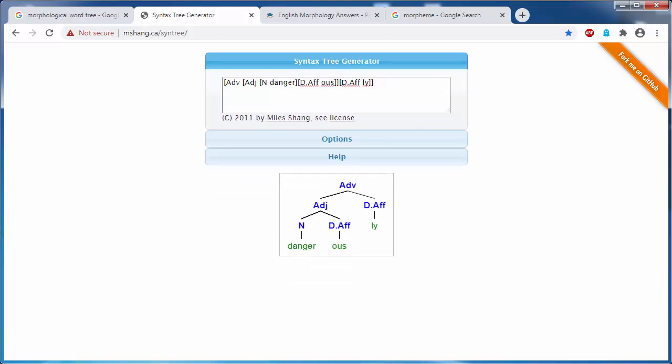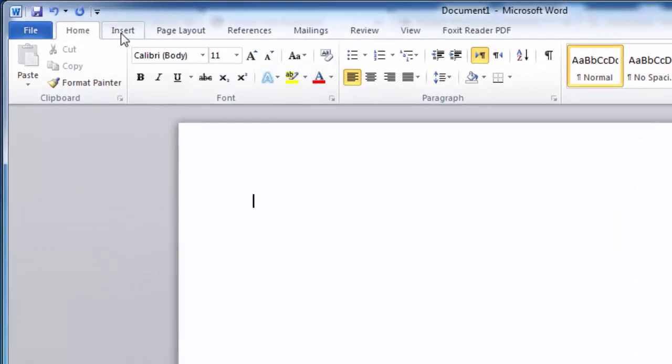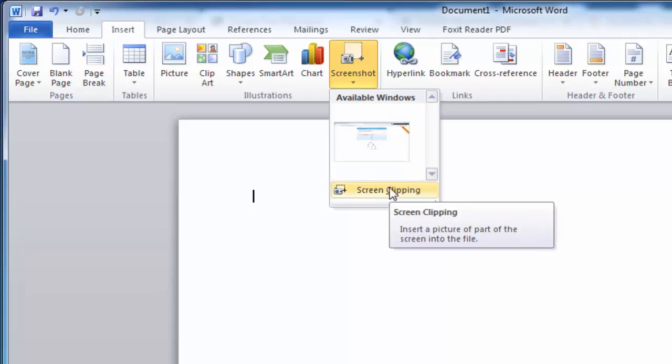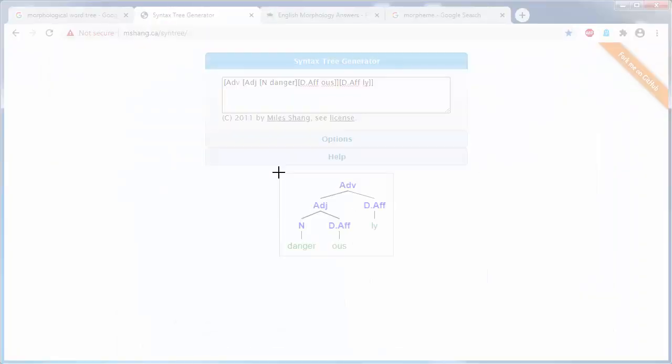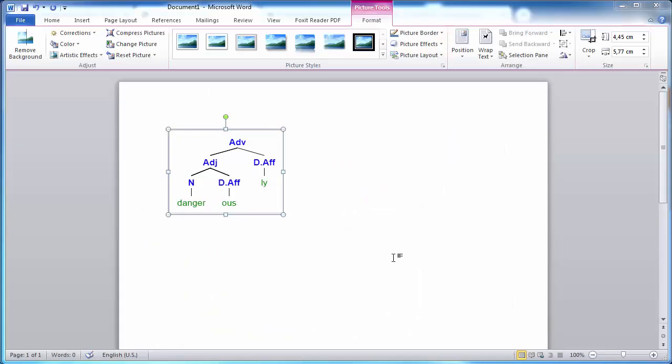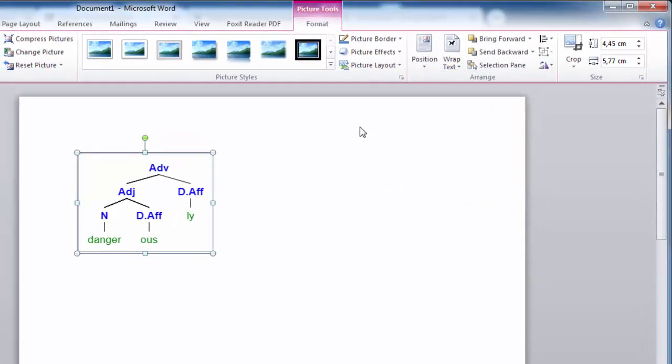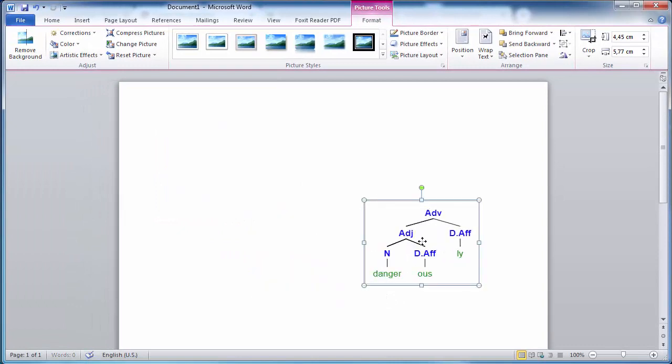We need to take it to Word, so we open Word, click on Insert, click on Screenshot, then Screen Clipping. We select our tree, then we modify this option to 'through' so that we can place it wherever we want in our page.